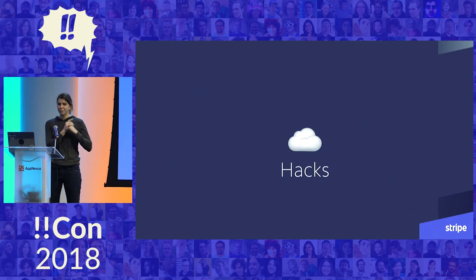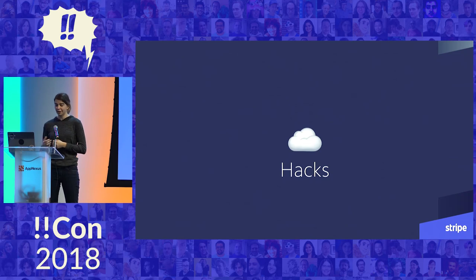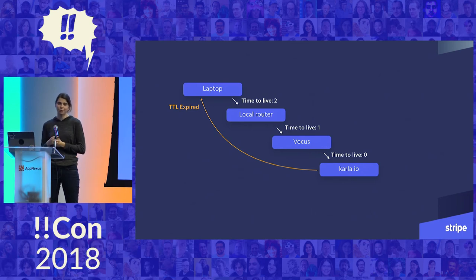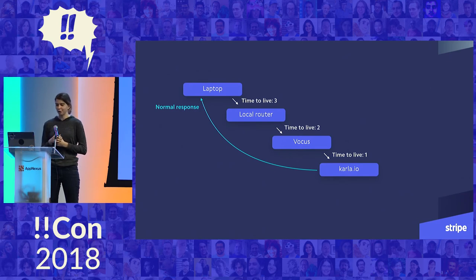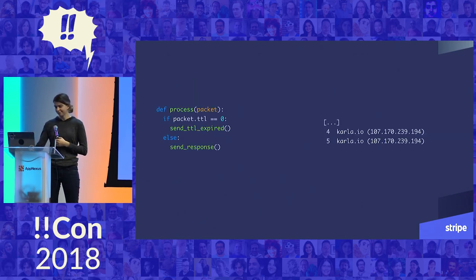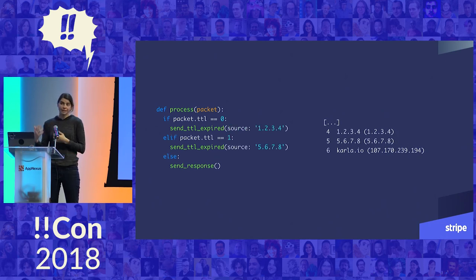But since Traceroute itself is a hack, I can abuse it with my own hacks. Rather than sending TTL expired messages just if I get a packet with a TTL of zero, what happens if I also send it for any packet that has a TTL less than a certain amount — say, the amount we want to pretend that we're farther away by? So concretely, if I got a request with a time to live of zero when it gets to me, but the packet was destined for me in the first place, so I should really be sending a normal response — instead, I'll send a TTL expired response. Then when I get a request with a TTL of one, this time I'll actually send a normal response. To Traceroute, it looks like there was one extra hop along the way, so it's going to print out one extra line. It looks a little bit like this if you implement it in pseudocode Python. And we can obviously add multiple steps and spoof who we send that TTL expired message from, to control the IP addresses we see in the output.